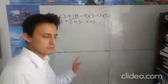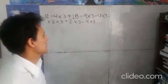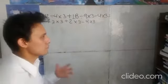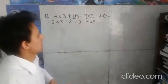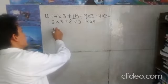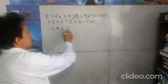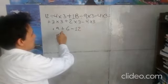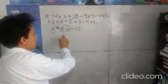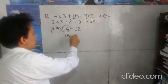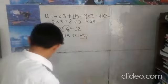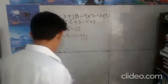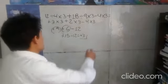Ya que es jerarquización de números enteros, no estamos viendo todavía el aspecto algebraico, pero es importante determinarlo de forma adecuada. Entonces tengo: 3 por 3 es a 9, más 2 por 3 es a 6, menos 4 por 3 es a 12. Y a partir de aquí podemos proceder: 9 más 6 es 15, menos 12 es igual a más 3. Corroboramos si fue la respuesta correcta, y pues estamos bien.